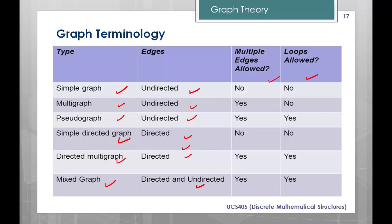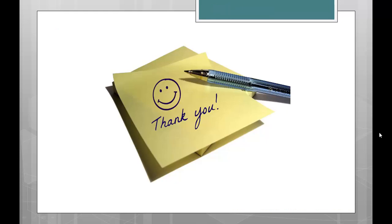What we want to study here is: are multiple edges allowed, and are loops allowed for each type? In a simple graph: no multiple edges, no loops. In a multigraph: multiple edges are allowed, but no self-loops. In a pseudograph: both are allowed. In a simple directed graph: no multiple edges, no self-loops. In a directed multigraph: both are allowed. In a mixed graph: both are allowed. This is overall about all types of graphs. Thank you very much. In the next lecture we will study the degree of a vertex.